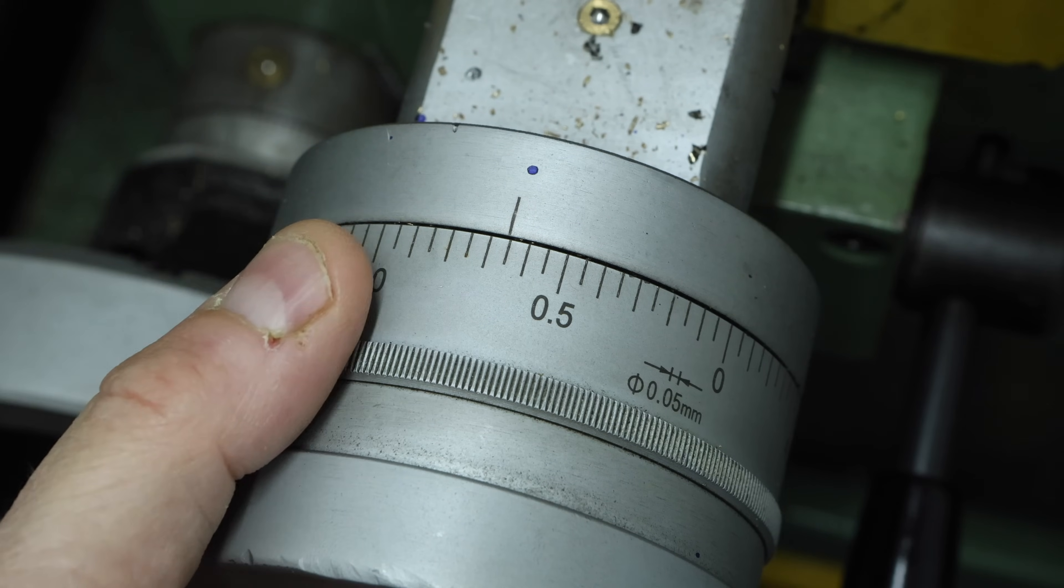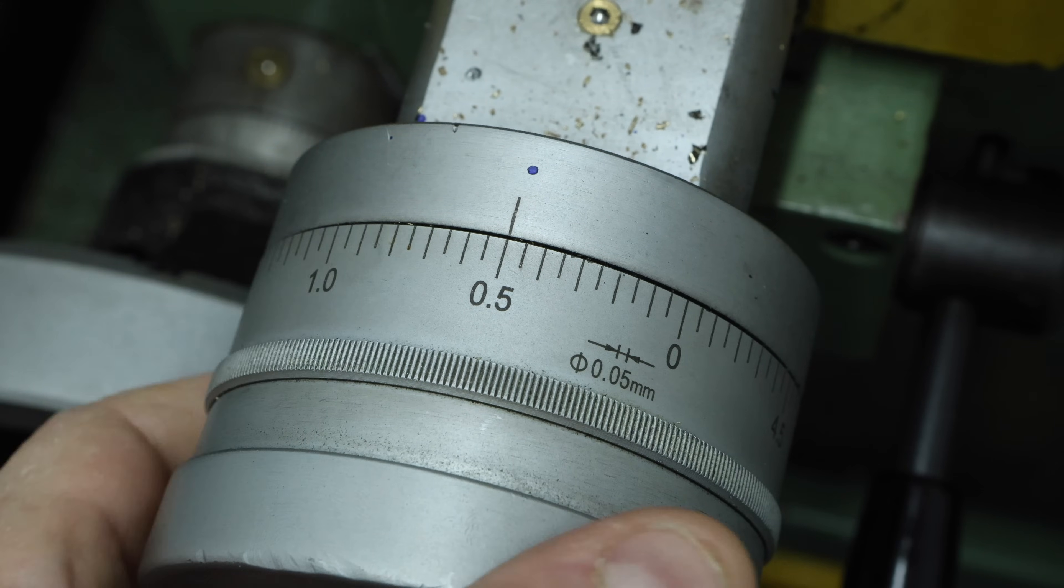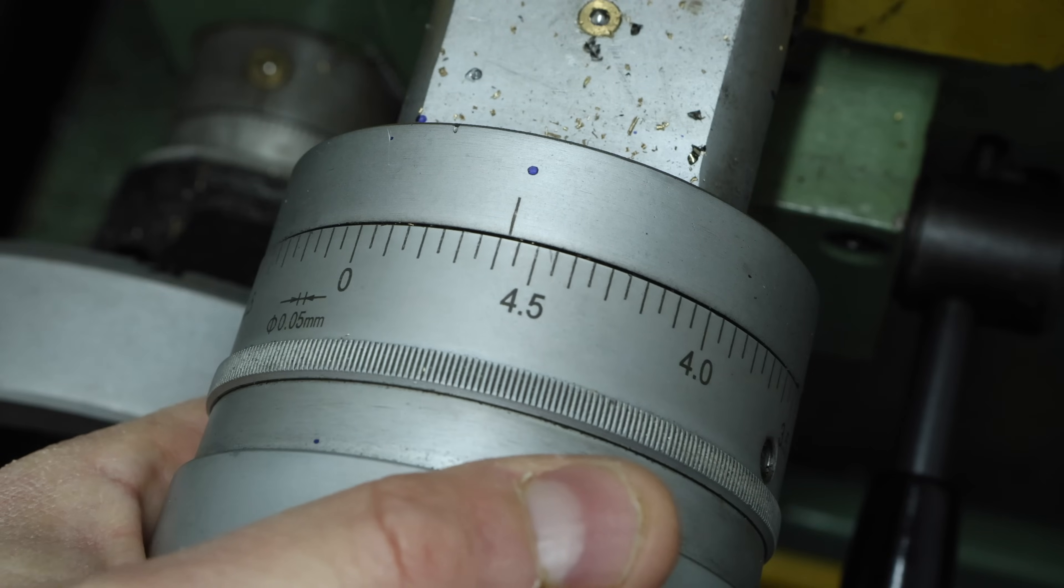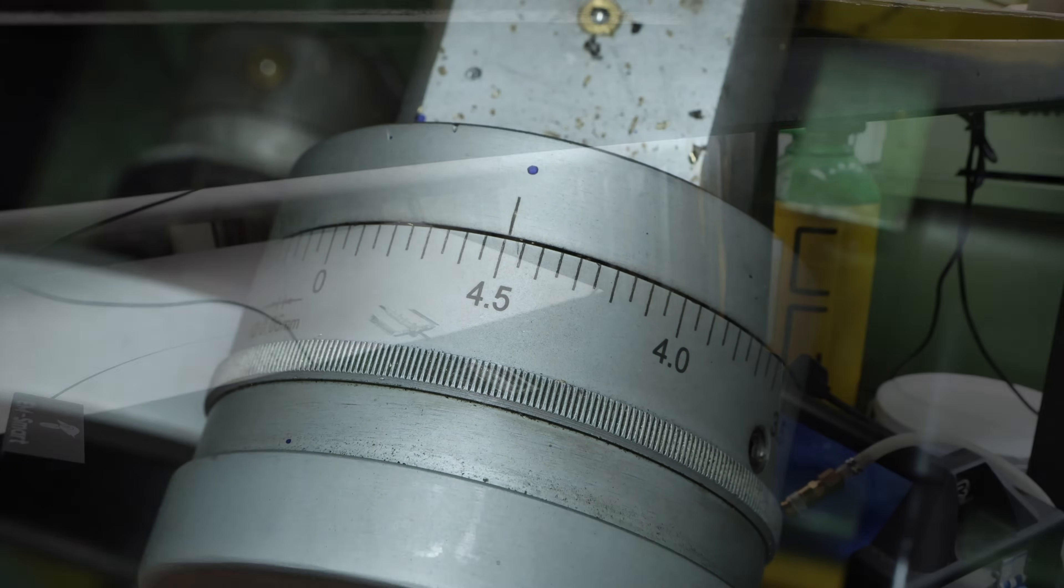For instance, I'd like to make micrometer handwheels like these, although that would require me getting a rotary attachment for this machine. If you'd like to see that, do let me know in the comments and be sure to hit that subscribe button.